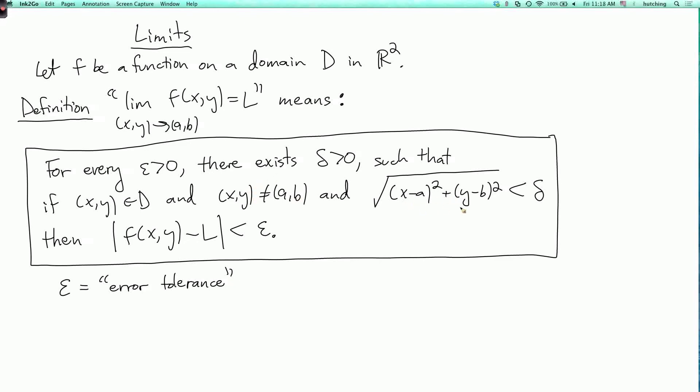The definition says that I can guarantee that by requiring (x,y) to be sufficiently close to (a,b). And sufficiently close means within distance δ. So you can think of δ as how close (x,y) needs to be to (a,b) to guarantee that f(x,y) is within the error tolerance of L.